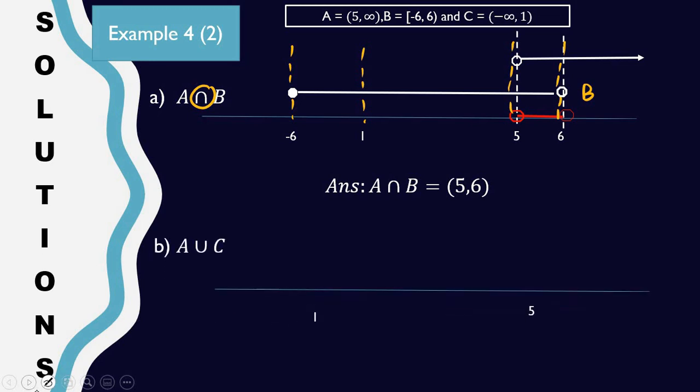Next question: A union with C. So we need to denote C first—this one is C. Meanwhile this one is A. You are looking for union, so union is regions with lines.